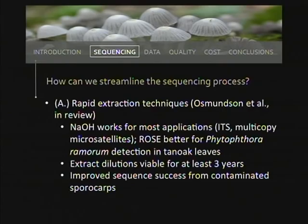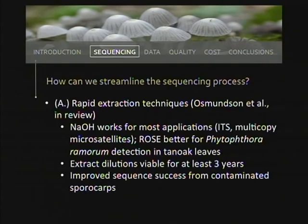The first topic is streamlining the sequencing project, starting with rapid extraction techniques. I really find extracting DNA to be arduous. We were using a typical CTAB extraction with a GeneClean cleanup, which was taking about five hours to run 24 samples. I started looking at different rapid extraction techniques. One is an extremely simple sodium hydroxide extraction: you put your sample with concentrated NaOH, mix it, take out an aliquot, and dilute it in Tris-HCl. It takes less than a minute per sample and works for most applications, including ITS and single-copy microsatellites.